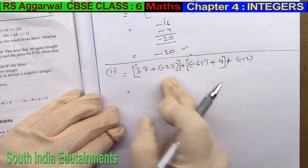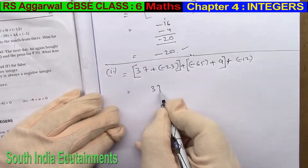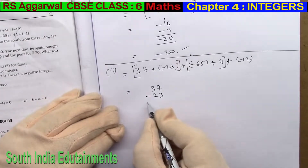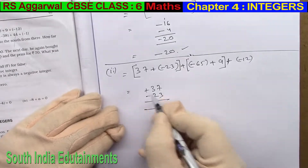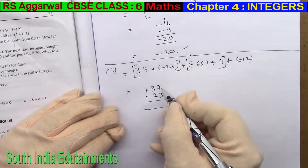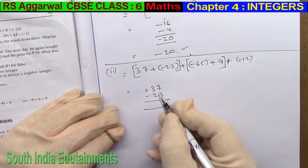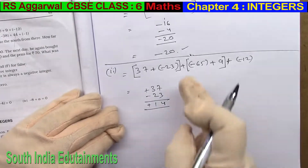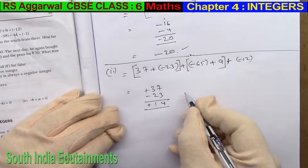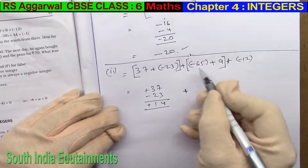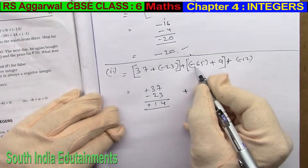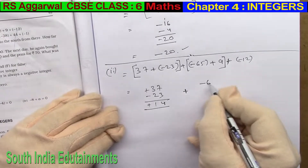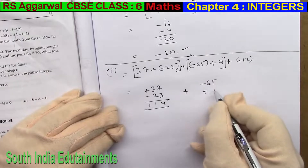37 minus 23. So, what do you think? 37 minus 23. Okay, 1 plus sign and minus sign. Difference is equal to: 7 minus 3 is 4, 3 minus 2 is 1. Symbol — plus. So, this bracket is solved. Plus bracket solve it. So, it's minus 65 plus 9.